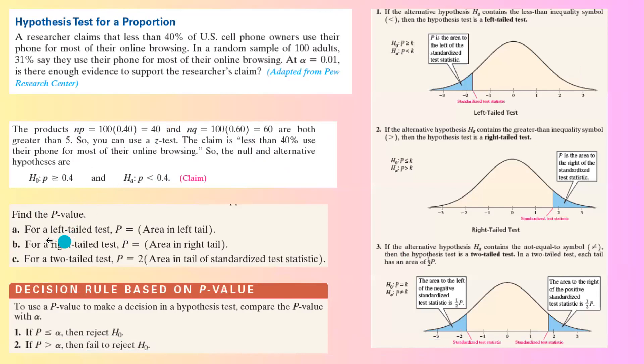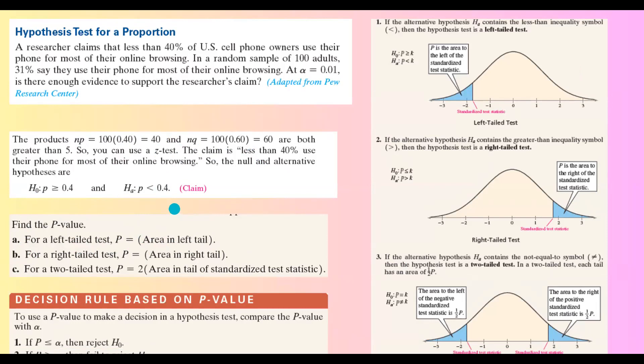To find p-value, if it's a left-tail test, the p-value is exactly the area to the left-hand side of your standardized test statistic. Let me show you how to use your calculator to find that p-value.